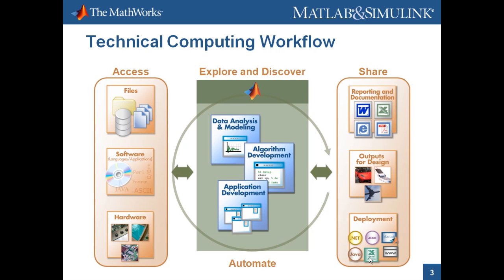The first thing I wanted to look at is how someone works with geospatial data. We have the technical computing workflow, which divides the process into three main stages. On the left, we need to access our geospatial data — stored in a file, a database, or perhaps on the internet. We bring it to the second stage where we process it: data analysis, modeling, or algorithm development. Then we pass results to the last stage where we share it — creating a report, a map visualization, deploying an application, or writing processed data out to a new file format to share with other GIS software.